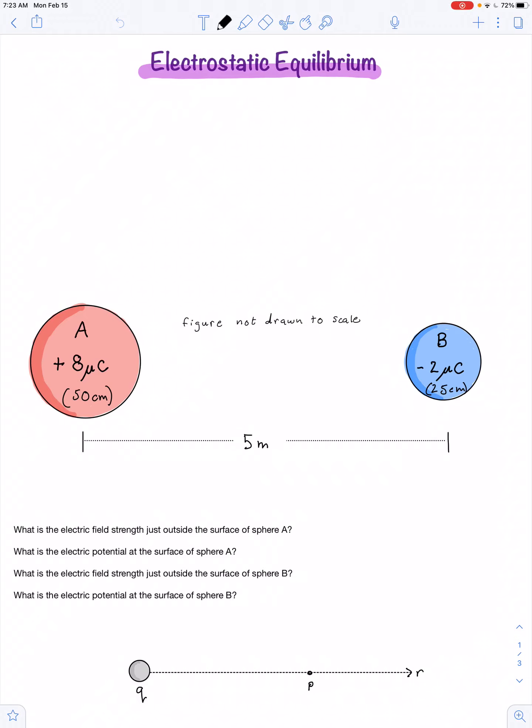Here you see two different spheres. They're both metal spheres, each of different radius. The radius of sphere A is 50 centimeters, and the radius of sphere B is 25 centimeters. Sphere A carries a positive charge of 8 microcoulombs, and sphere B carries a negative charge of negative 2 microcoulombs.